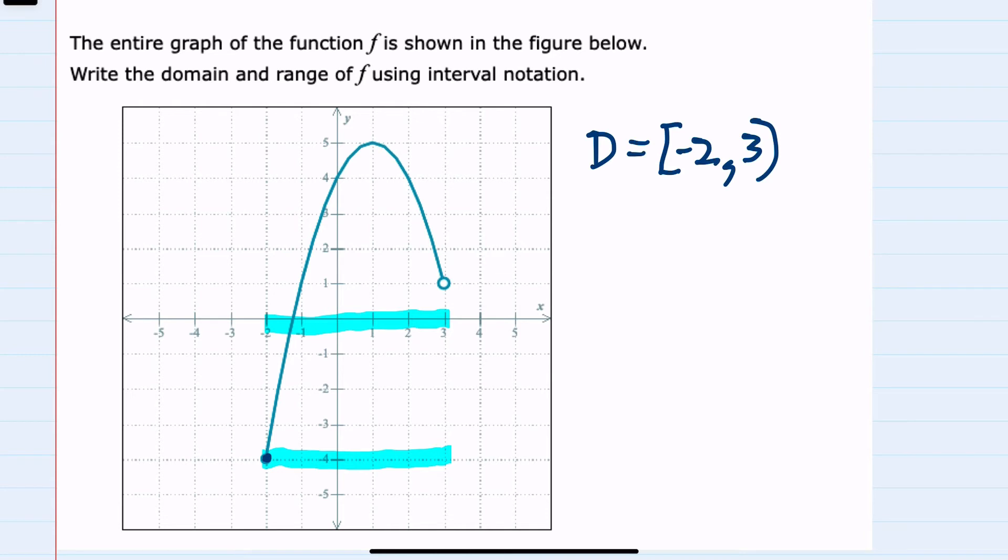The domain is x values between negative 2 and 3, and then for the range we'll follow the same process.